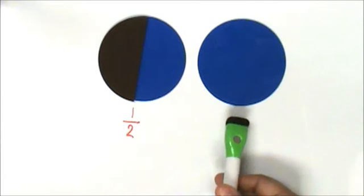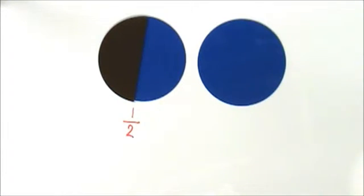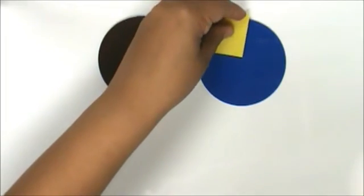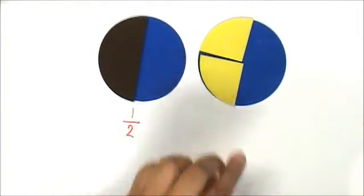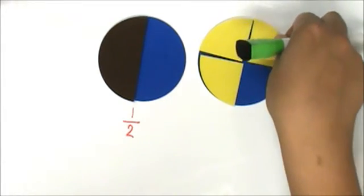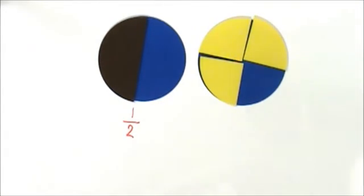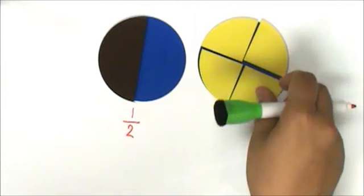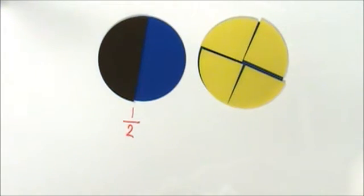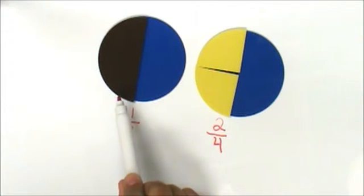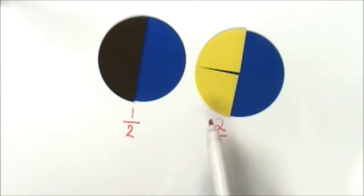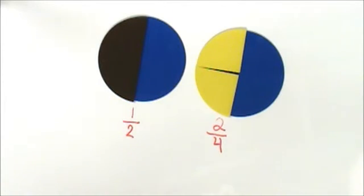Let's partition the second circle — the second whole — into fourths, four equal parts: one fourth, one fourth, one fourth, one fourth. Let's represent two fourths. It looks like one half and two fourths are the same size, and they cover the same portion of each circle.